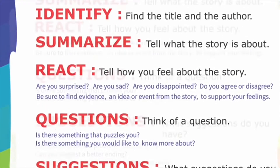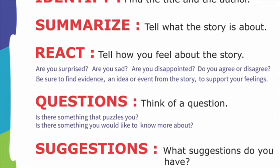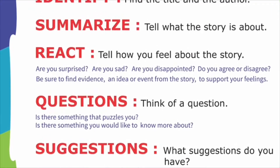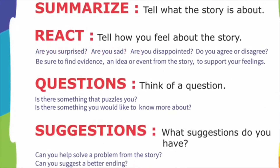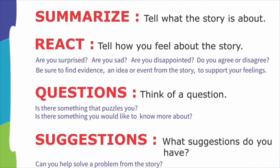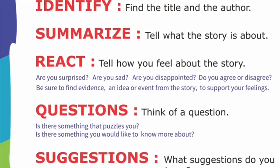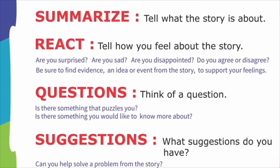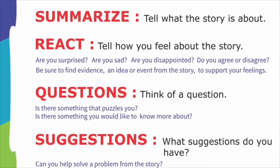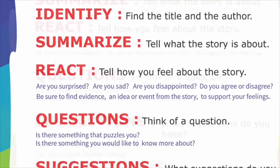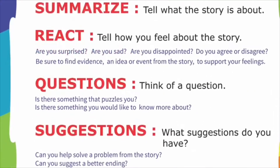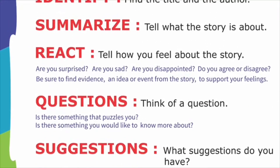Last episode, we dealt with the writing-to-respond process with a grades K-2 child. We looked at step one, identify; step two, summarize. We went through how to ask lower-order thinking skill questions. Then we looked at react, which deals with using students' social and emotional feelings or their skills to answer questions about how they feel. We also looked at how to ask evaluative and analysis questions.